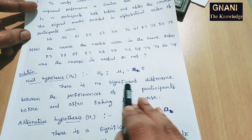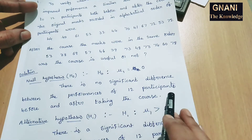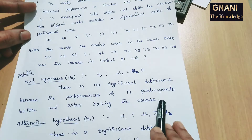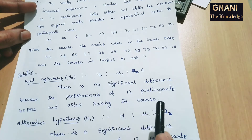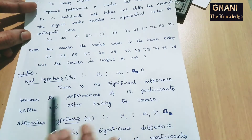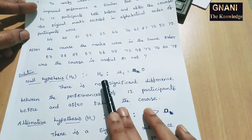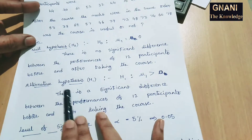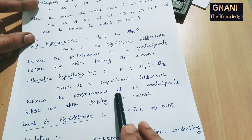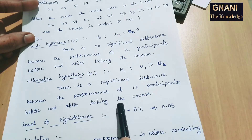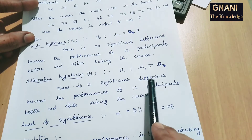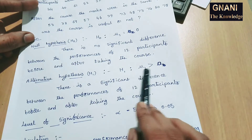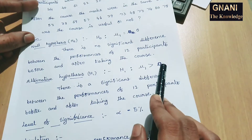There is no significant difference between the performances of 12 participants before and after taking the course. And H1 equal to mu1 greater than 0. This is a one-tailed test.